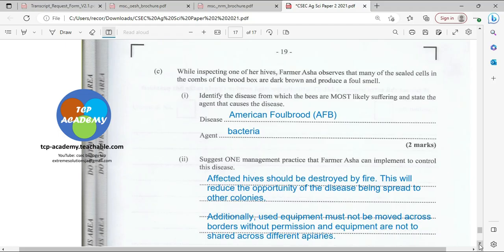I say here it's going to be American Foulbrood, which we call AFB. The signs and symptoms are plenty. The causative agent of course is going to be bacteria. I don't think you need to know the name of the bacteria. Suggest one management practice that Farmer Asha can implement to control the disease. Once Farmer Asha realizes that she has this disease on her property, it needs to be reported to the relevant authority—it's going to be the environment ministry or the agriculture ministry or the beekeeping association. It needs to be reported so that it can be controlled.